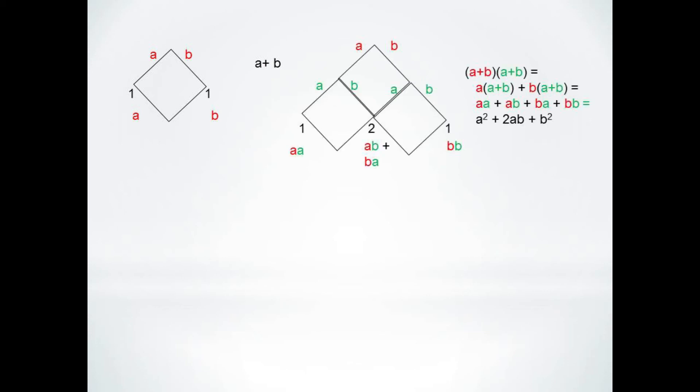a plus b to the first only has one a and one b. But consider a plus b squared. Now we can distribute our second a plus b across the first, giving us a times a plus b plus b times a plus b.